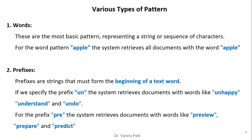Prefixes are strings that must form the beginning of a text word. If we specify the prefix 'un,' the system retrieves documents with words like 'unhappy,' 'understand,' and 'undo.' For the prefix 'pre,' it retrieves words like 'preview,' 'prepare,' and 'predict.' In a search interface, we can type 'un*' with a wildcard star to find all occurrences starting with 'un.'